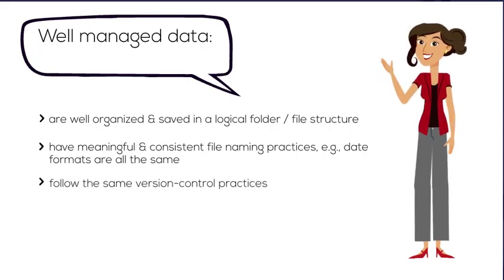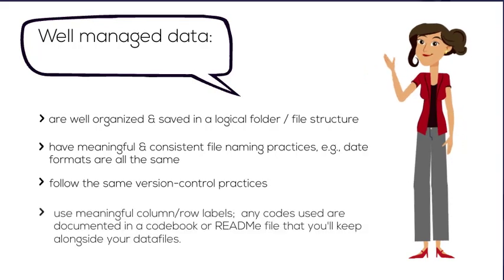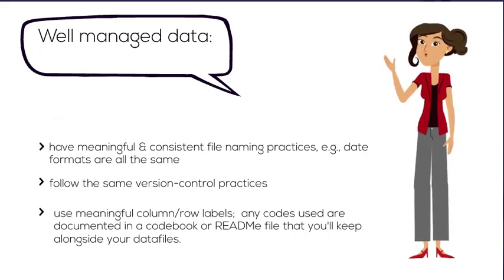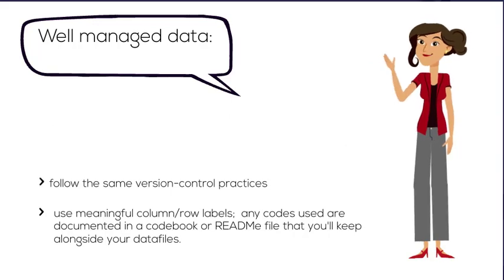Are saved following a consistent version control plan, are labeled using meaningful column and row labels rather than obscure codes that no one outside the team would understand. Any codes that are used are documented in a codebook or readme file that you'll keep alongside your data files.